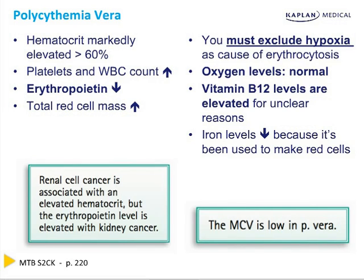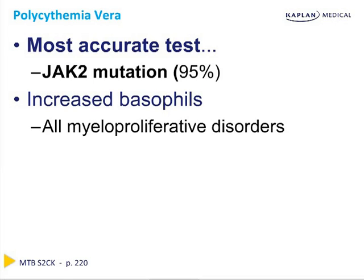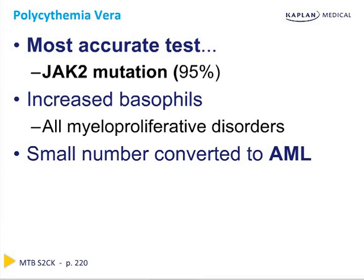There are very few causes of microcytic erythrocytosis — cells that are small but present in high numbers, meaning a low MCV but increased count. That's basically thalassemia, hypoxia, and polycythemia vera. The most accurate test for polycythemia vera is the JAK2 mutation, found in 95% of patients. There are increased basophils as in all myeloproliferative disorders, and a small number can convert to acute myelogenous leukemia. It's the basophils and their histamine that make patients itch, particularly after a hot shower.